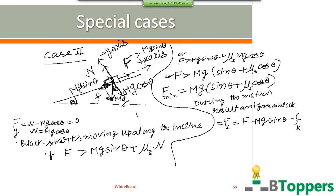Here νk is the coefficient of kinetic friction between the block and the inclined surface.